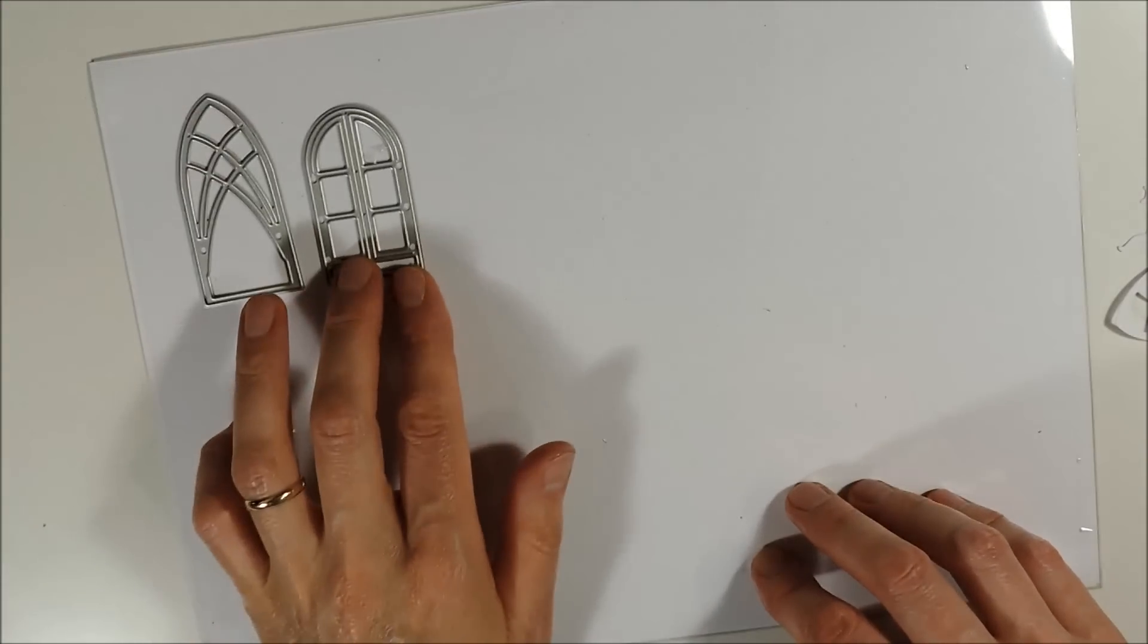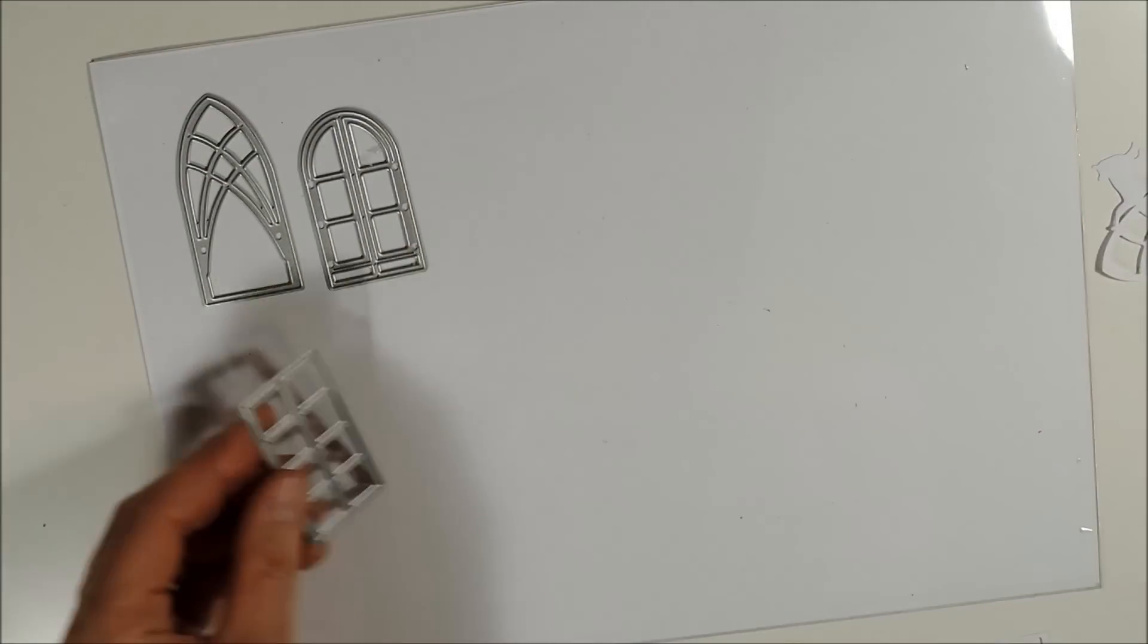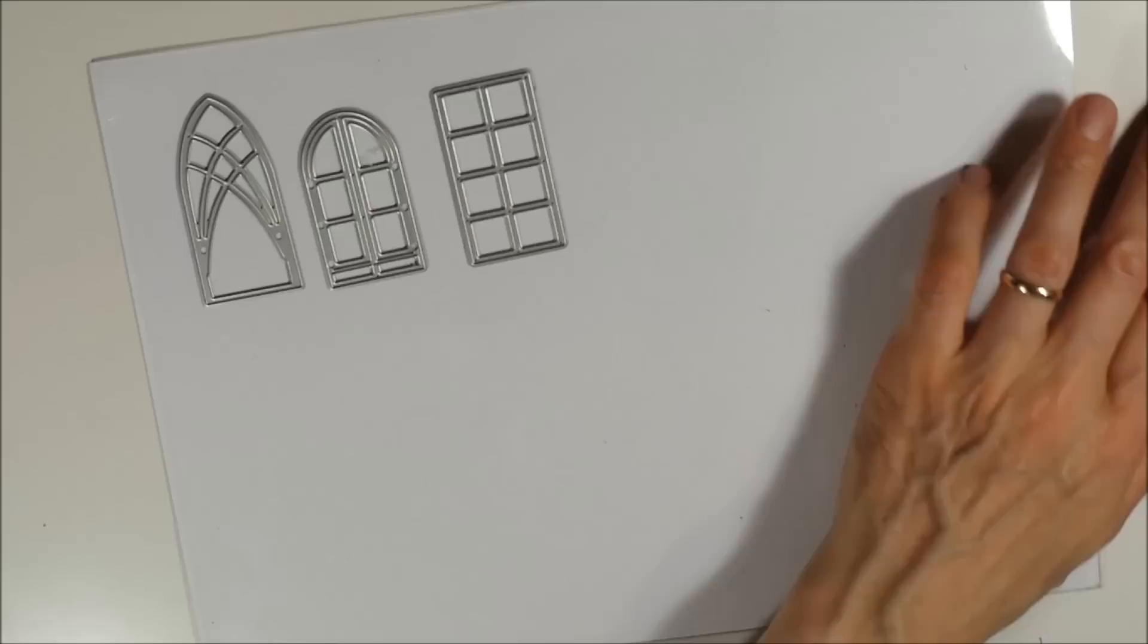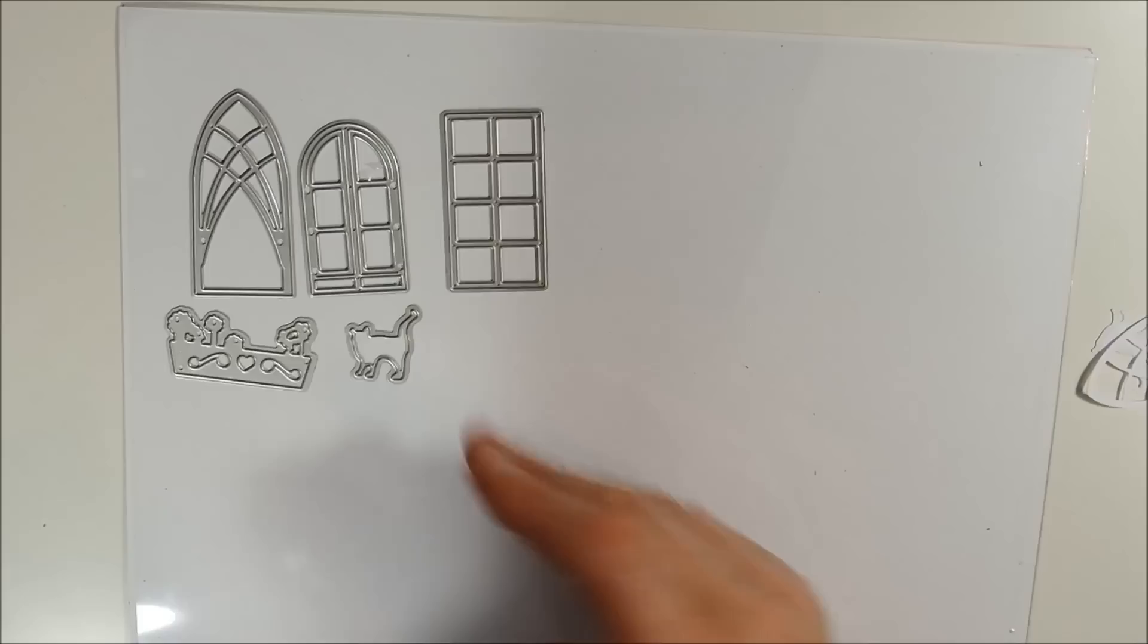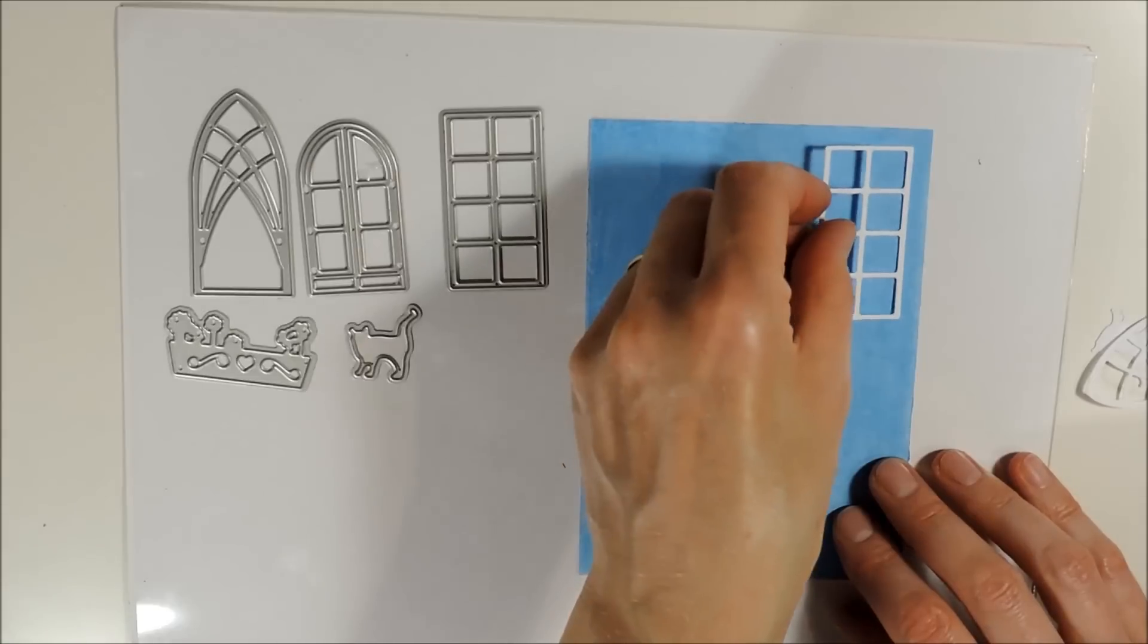Now I have a window die set which consists of three different windows, a flower pot and a little cat. And the cut outs look like this.